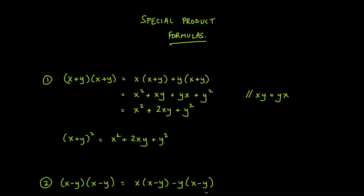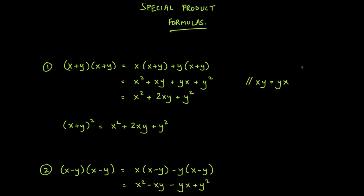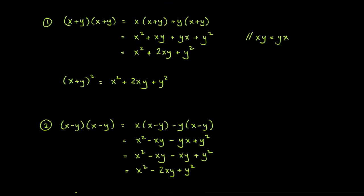So xy plus xy gives 2xy since they're like terms — coefficient 1 plus coefficient 1 equals 2. The y squared just comes along for the ride. The formula to memorize is: (x + y)² = x² + 2xy + y². This is known as a perfect square.